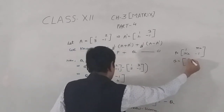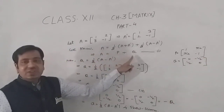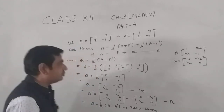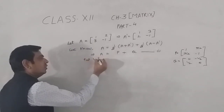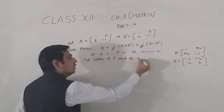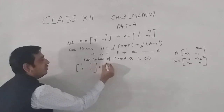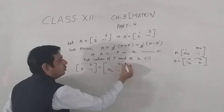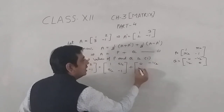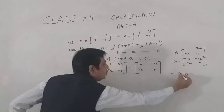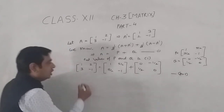Now we have both P and Q. Put the values into the equation: A equals P plus Q, so [1, 2; 3, -1] equals [1, 5/2; 5/2, -1] plus [0, -1/2; 1/2, 0]. This is the answer — the given matrix is expressed as a sum of a symmetric and a skew symmetric matrix.